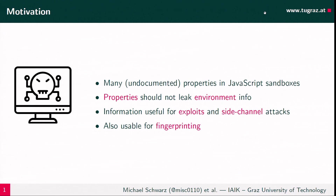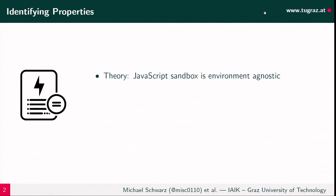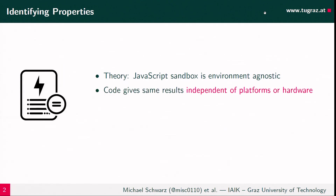If these properties leak environmental information, they can also be used for fingerprinting, because we can track users across websites. In theory, we have this JavaScript sandbox that is agnostic of the environment. So if we execute code, it should give us basically the same result no matter what software or hardware is running outside the JavaScript interpreter.